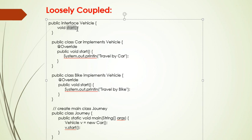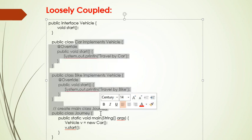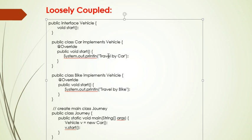In that interface, I just used one method, the start method. I have taken a number of classes here to implement the interface: Car class, Bike class, and Journey class. I am implementing the Vehicle interface.